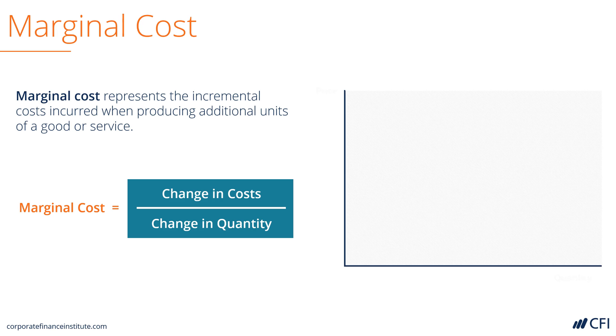Let's look at a graph of how a firm can maximize its profits. Here is the marginal cost of producing a good or service. We've got price on the vertical axis and quantity on the horizontal axis.